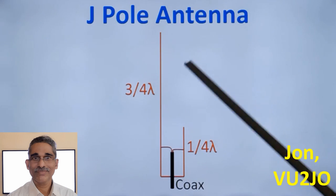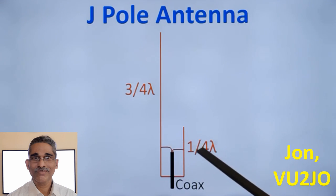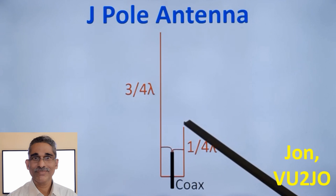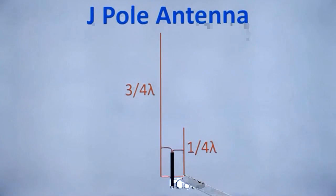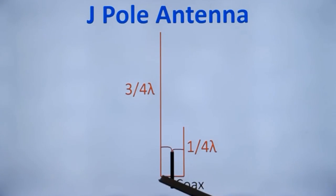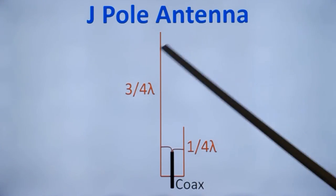J pole has a gain of around 2 dB above a ground plane vertical antenna. This region between the two elements, between the shorting stub and the matching stub and the main element, should be less than 2% of the wavelength. And the whole assembly should be away from conducting material. You should not have metallic structures near this.